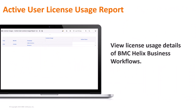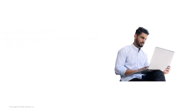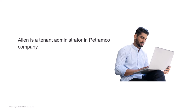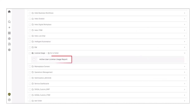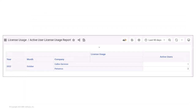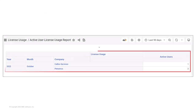Using the Active User License Usage report, you can get the license usage details of BMC Helix Business Workflows. Alan is a tenant administrator in Petramco company. He wants to monitor the license usage of BMC Helix Business Workflows. Alan opens the Active User License Usage report. The dashboard displays the number of active users in Petramco.